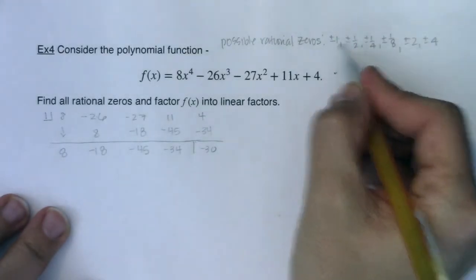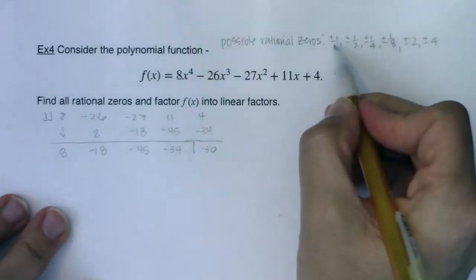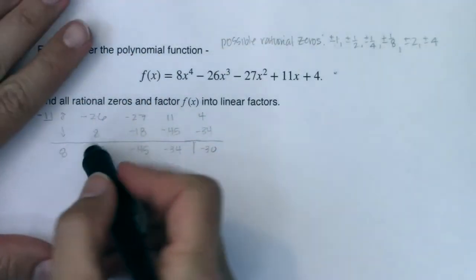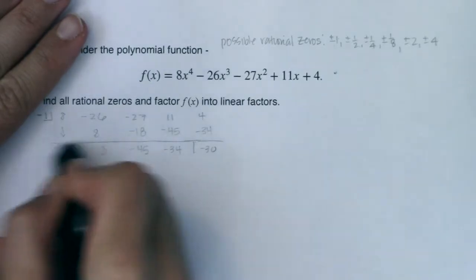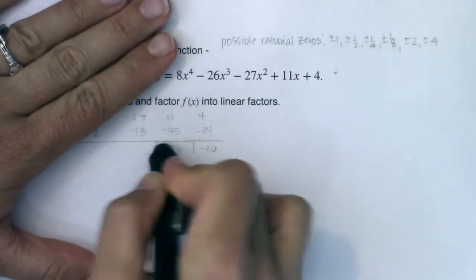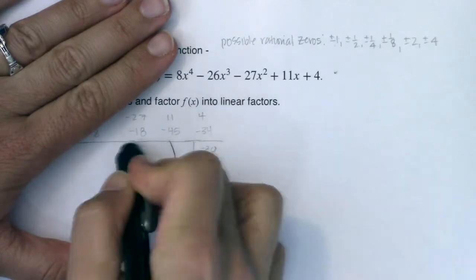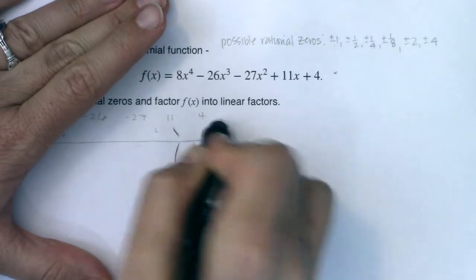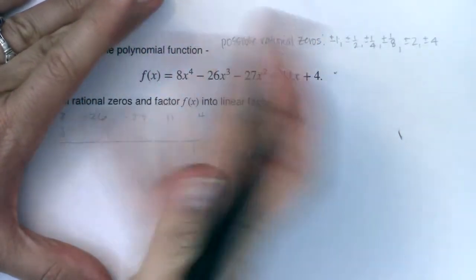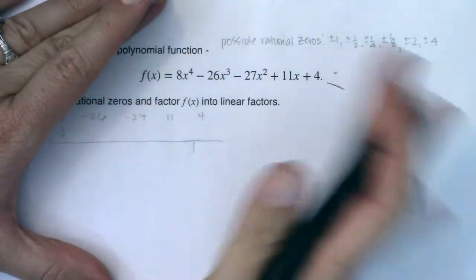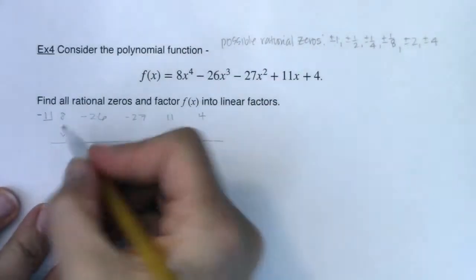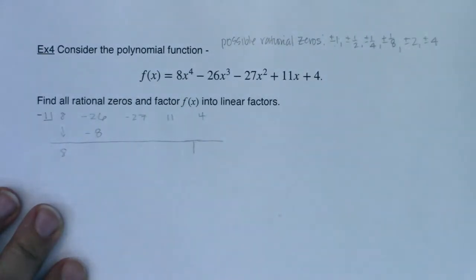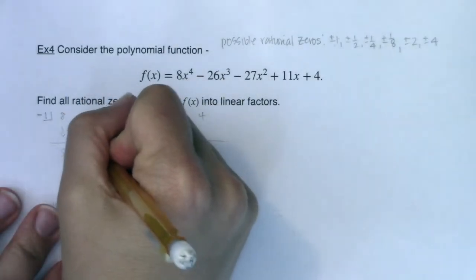The next one that I'm going to try, I usually save the fractions till the end. I'm going to try negative one. So let's see if negative one works. I would have eight, that would become negative eight. When I added those together, I think I'm looking at negative 34.